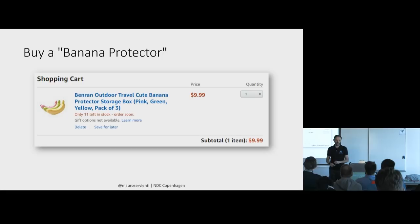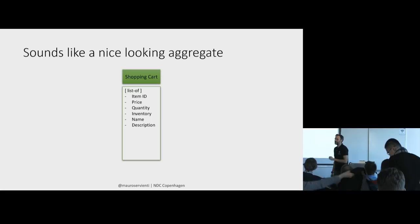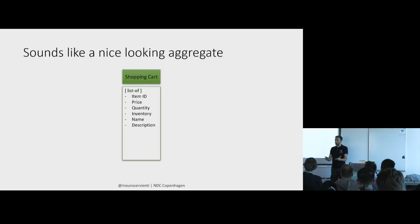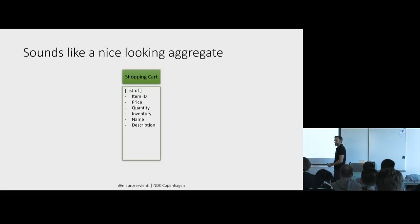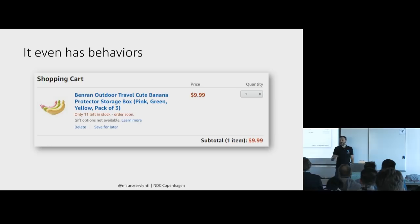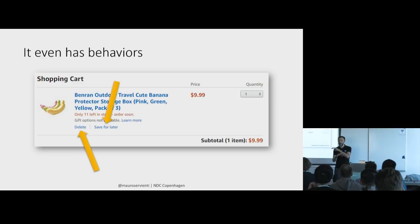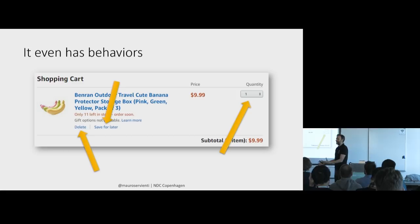At first look, it sounds like a very nice aggregate, doesn't it? We have a shopping cart — it's a concept really aligned with the user mental model. Business people talk about shopping carts all the time: adding products, changing the quantity, removing products. So why not model that as an aggregate? It even has behaviors: delete to remove something, save for later to move it outside the cart, and change quantity. It fits the perfect definition of an aggregate — data and behaviors. So why not?